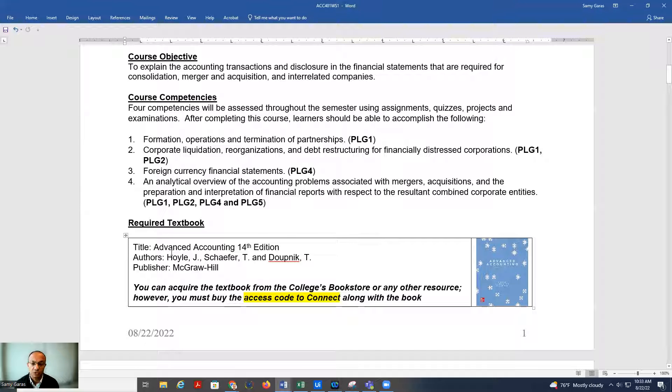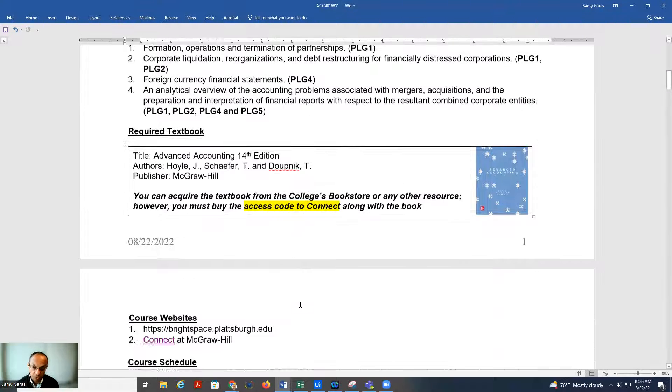The book I'm going to use in this course is Advanced Accounting 14th edition by Hoyle and Schaefer. You don't have to buy the book from the bookstore, but you can buy it from anywhere as long as you get the access code to Connect.